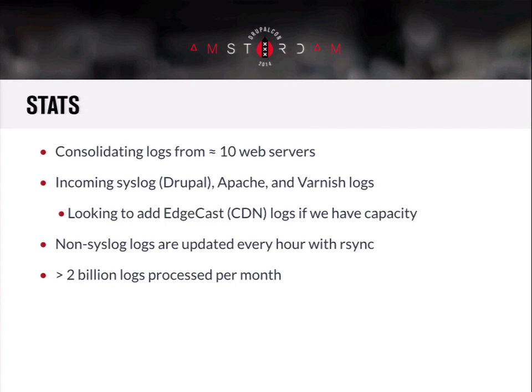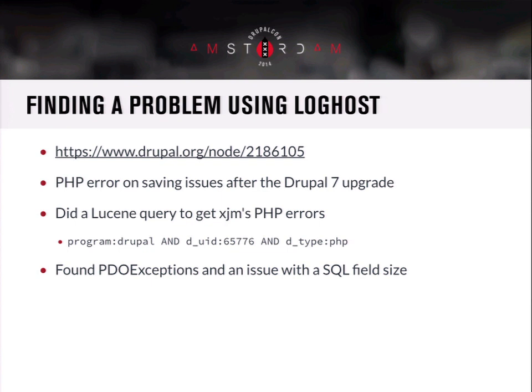Currently we're processing a little over 2 billion logs a month with that hardware, and we're going to see what we can get to after the upgrade to Elasticsearch 1.3 and a slightly newer kernel on CentOS 6. A simple example of using the log host to find a problem: we deployed the log host about two months before the D7 upgrade went live for Drupal.org. One node had a problem where XJM was having trouble updating an issue on D.O. — you'd hit save and it would say 'the website encountered an error.' Since you can't see the real error logs normally, we're using the same scheme I showed, and I could just simply do a query saying program equals Drupal.